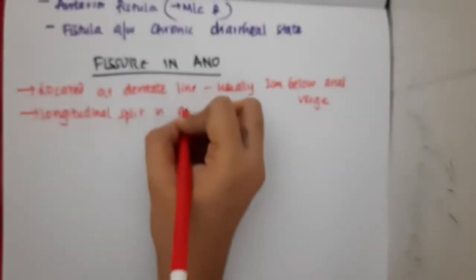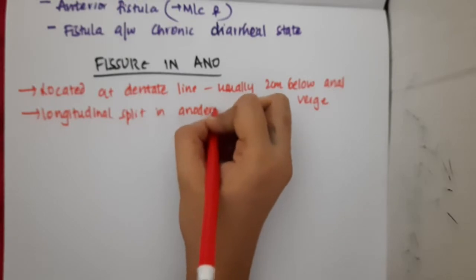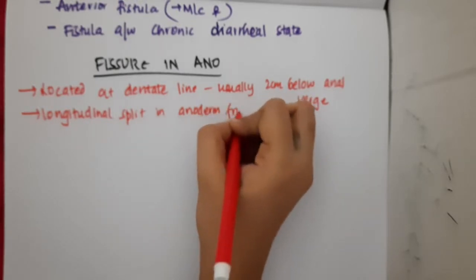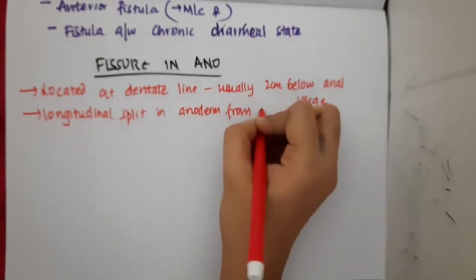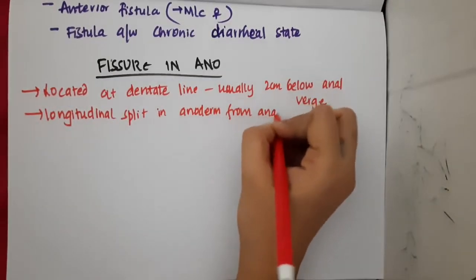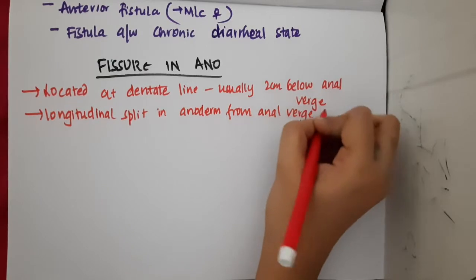In fissure in ano, there will be a longitudinal split present in the anoderm, from the anal verge to the dentate line.